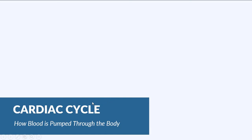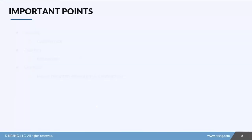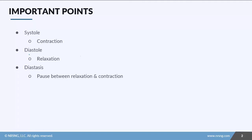In this lesson we're going to talk about the cardiac cycle and how blood is pumped throughout the body. Before we get started, I want to go over a couple of really important terms. The first one is systole, which is the contraction of whatever chamber we're talking about. Then you need to know diastole, which is the relaxation of that chamber. And then you have to know diastasis, which is the pause between your relaxation and contraction.